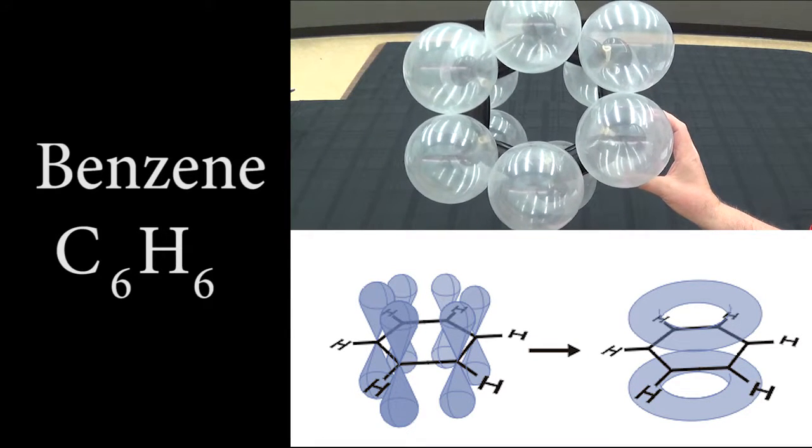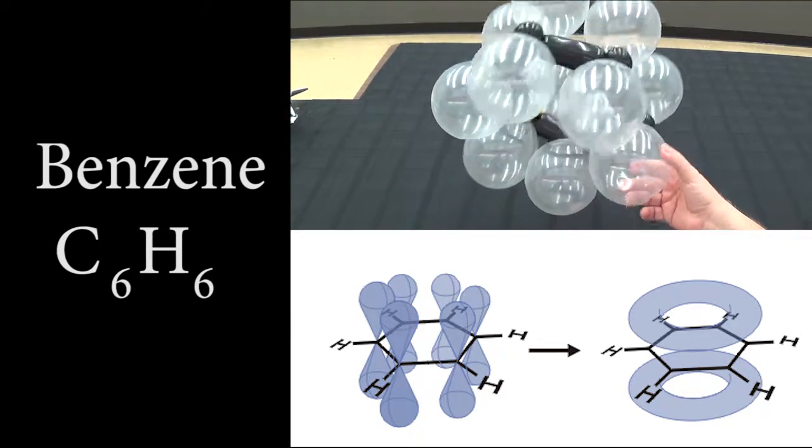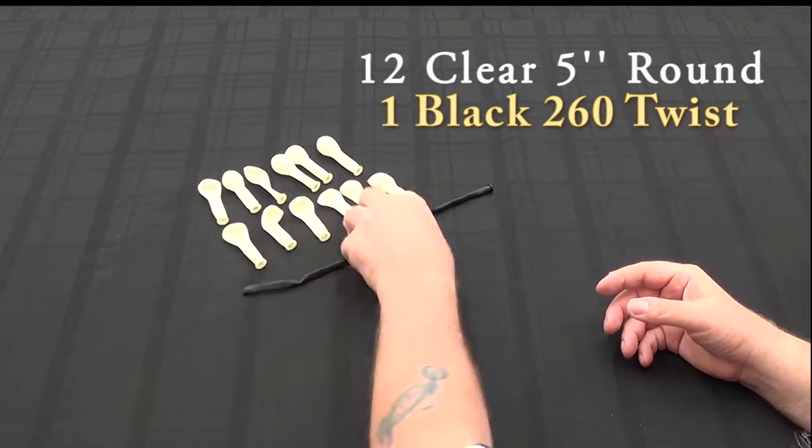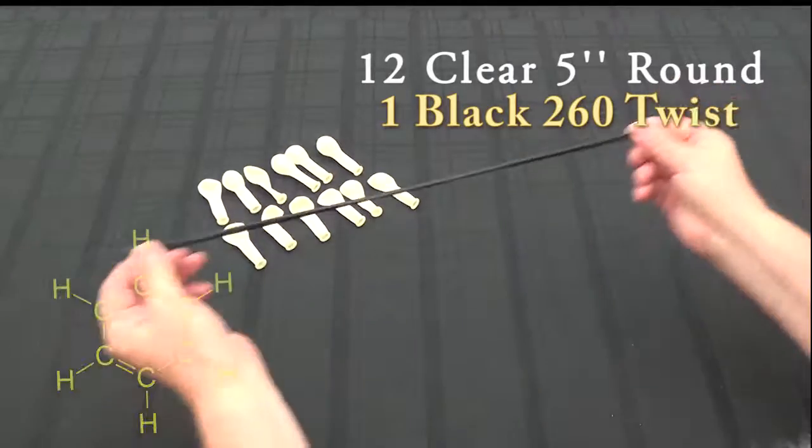Okay, in this video we're going to make a model of benzene which allows students to see the orbital cloud above and below the plane of the ring using 12 5-inch clear balloons for the orbitals and one black 260 balloon for the carbon framework.